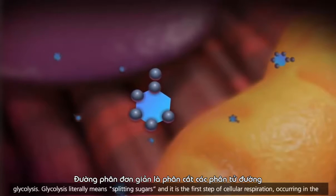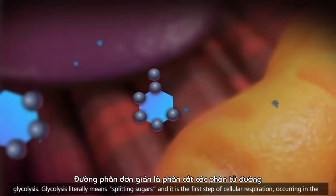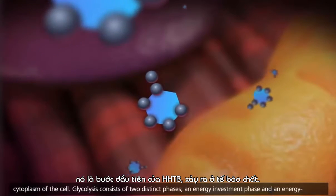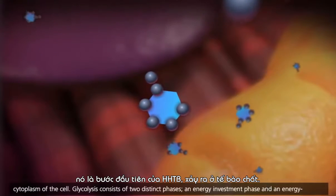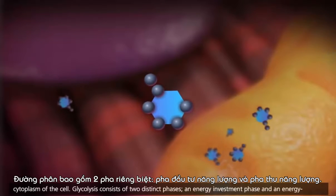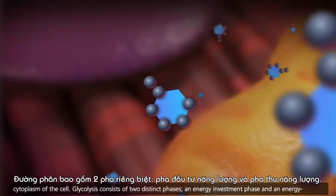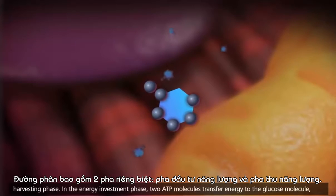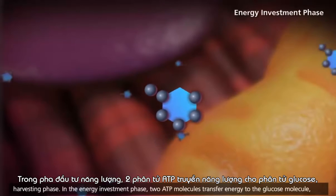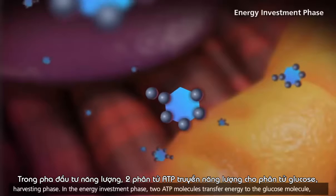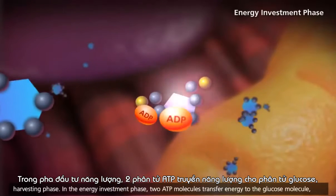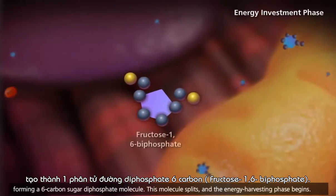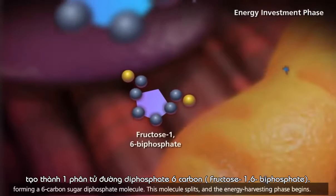Glycolysis literally means splitting sugars, and it is the first step of cellular respiration, occurring in the cytoplasm of the cell. Glycolysis consists of two distinct phases: an energy investment phase and an energy harvesting phase. In the energy investment phase, two ATP molecules transfer energy to the glucose molecule, forming a six-carbon sugar diphosphate molecule.